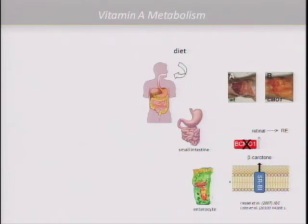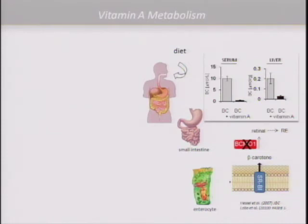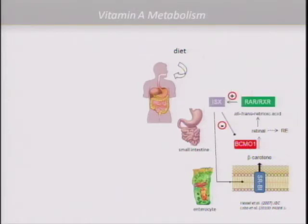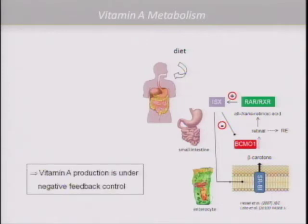We also had another interesting observation: this accumulation can be completely repressed by vitamin A, so there must be some regulation. This regulation works as follows: besides retinyl ester production from the primary cleavage product, retinol is also converted to retinoic acid, which binds retinoic acid receptors. Mammalian genomes have a single transcription factor called ISX, which is specialized for this process and suppresses the expression of the uptake protein and also the cleavage enzyme. This means that vitamin A production is under negative control of retinoic acid.